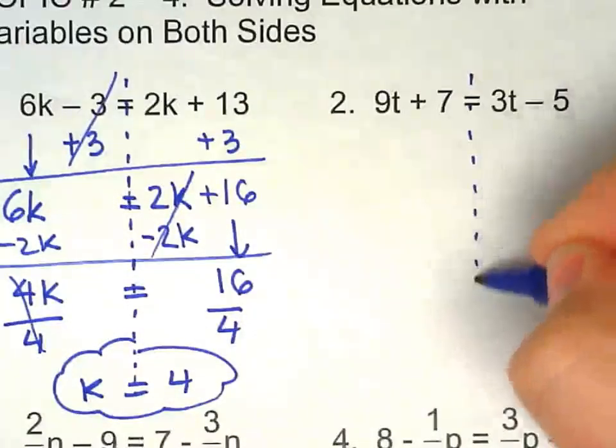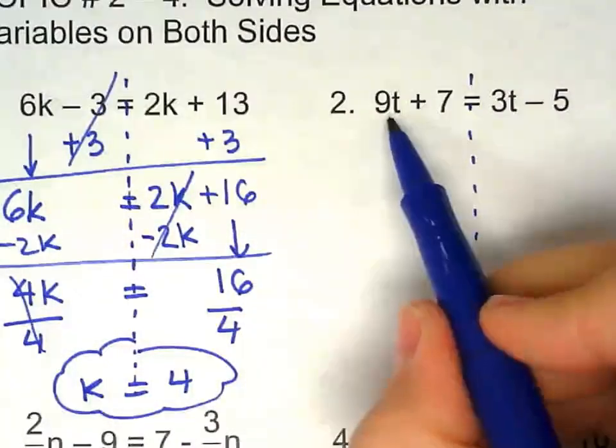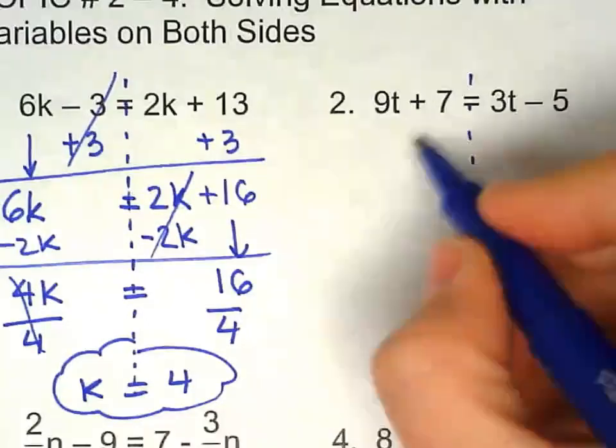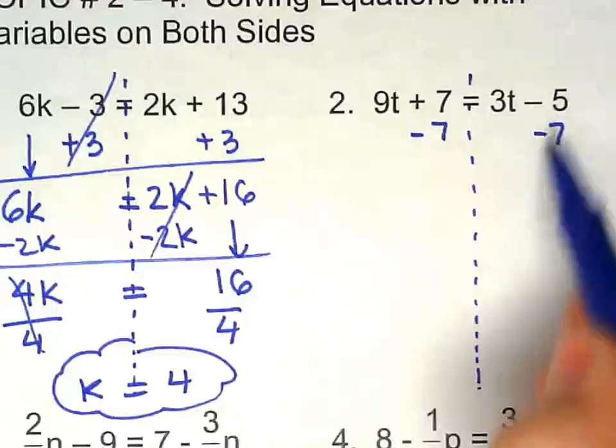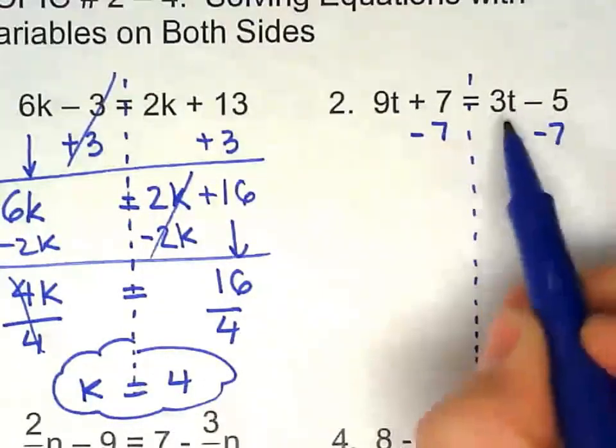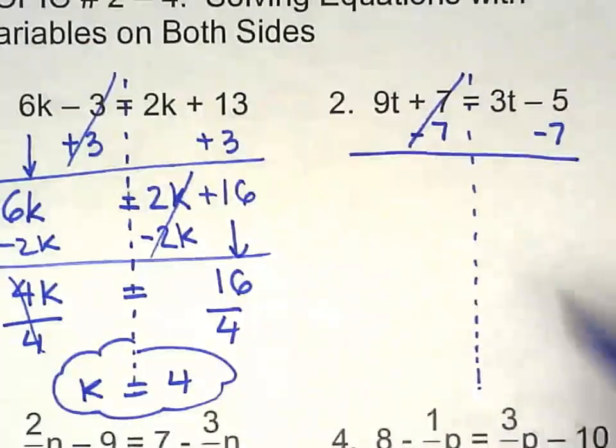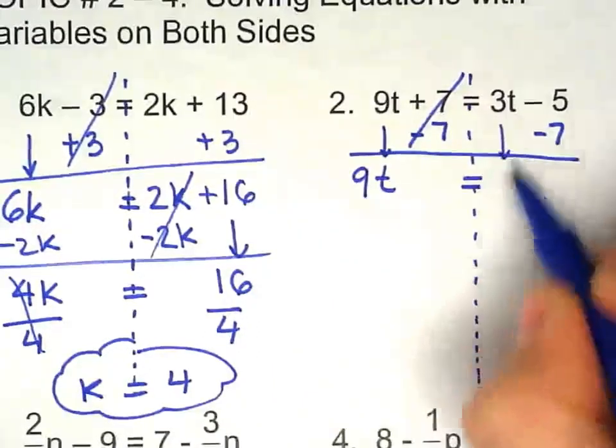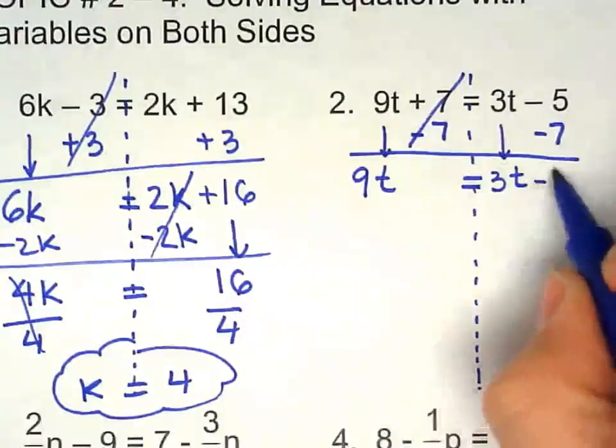Number 2. Very similar to number 1. So we have to keep the variable on the left. So we can get rid of 7 right here. So plus 7. Notice that I keep them lined. That way I'm not really tempted to do 7 under t because they do not go together. So number under number. Bring the variable down. Equal sign down. Bring 3t down. Negative 5 minus 7.